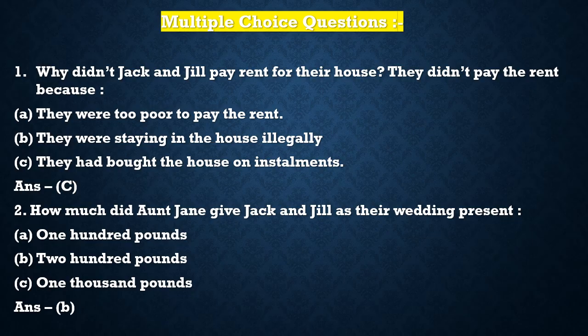Now the answers of multiple choice questions. Question 1: Why didn't Jack and Jill pay rent for their house? Three options: A. they were too poor to pay the rent, B. they were staying in the house illegally, C. they had bought the house on installments. The correct answer is C — unhone apna ghar installment mein khareeda tha.